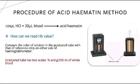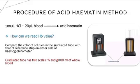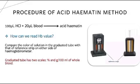My name is Hadiya and I'll give you an overview of the acid hematin method procedure. You'll need 100 microliters of HCl and 20 microliters of blood — stir them together to get the acid hematin solution. To read the hemoglobin value, match the color of the graduated tube with the reference strips. If the color matches properly, that is the correct ratio. The graduated tube has two scales: one for percentage and one for g/dL.